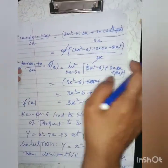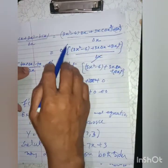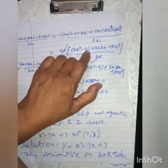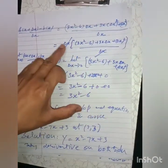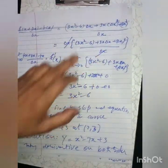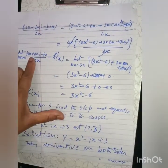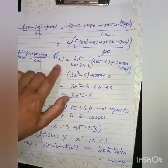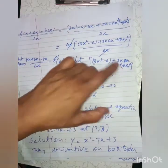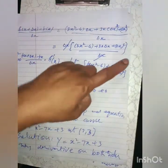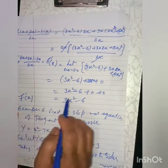Taking Δx common from the numerator gives (3x² - 6 + 3x·Δx + (Δx)²). The Δx in the numerator and denominator cancel. Taking the limit as Δx → 0, f'(x) equals the limit as Δx → 0. Substituting Δx = 0, we get f'(x) = 3x² - 6, which is the derivative of the given function.